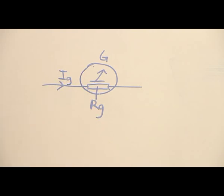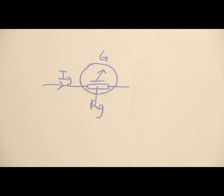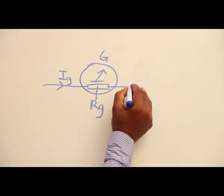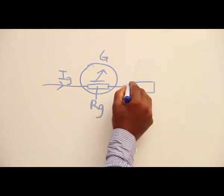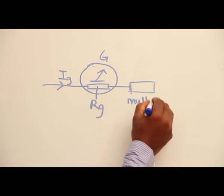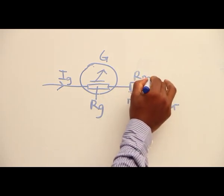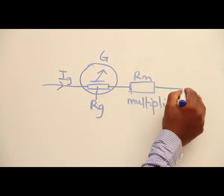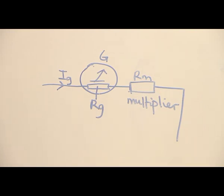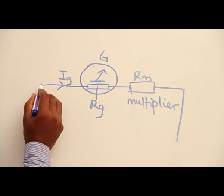To convert this to a voltage measuring device, we connect another resistance in series with this coil. This resistance is called multiplier because it multiplies the voltage. The multiplier is indicated with letter R subscript M.